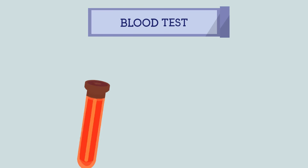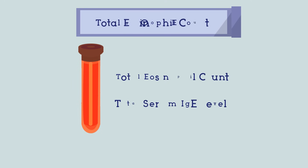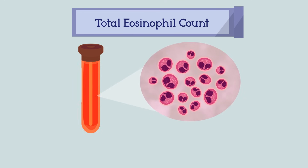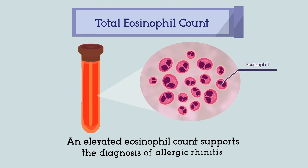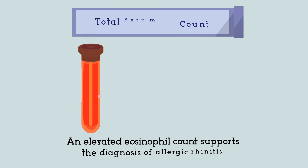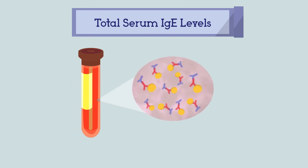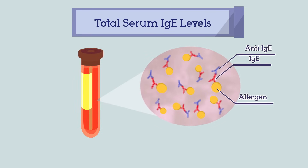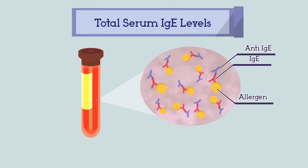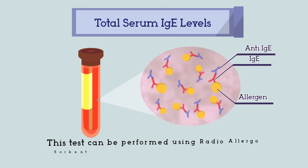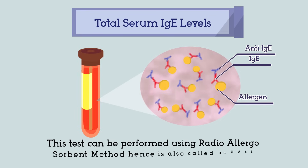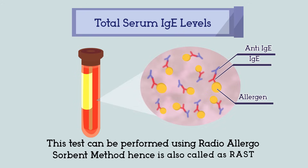3. Blood test. A. Total blood eosinophil count. As with the total serum IgE, an elevated eosinophil count supports the diagnosis of allergic rhinitis. B. Total serum IgE. This is a measurement of the total level of IgE in the blood. An elevated serum IgE level supports the allergic rhinitis diagnosis. This test can be performed using the radioallergosorbent method, hence it is also called the RAST test.